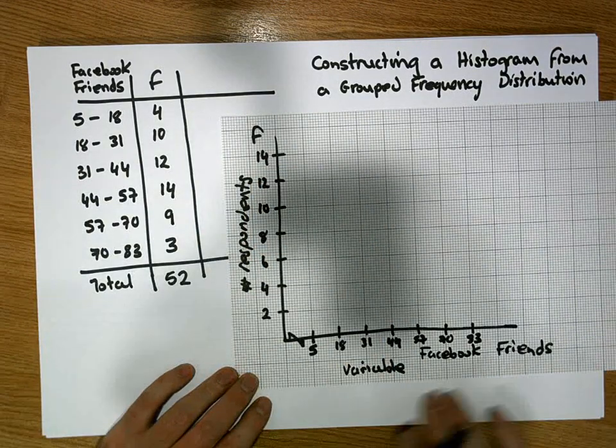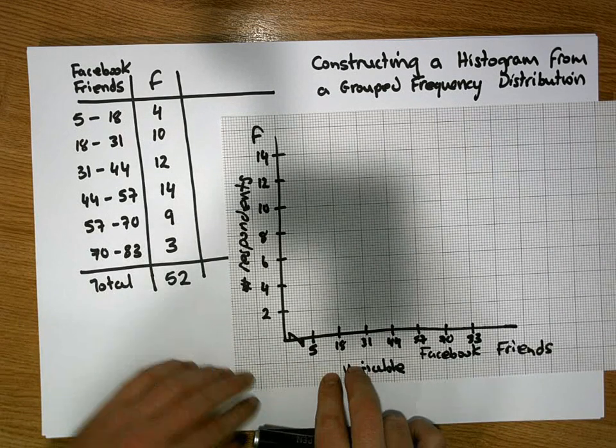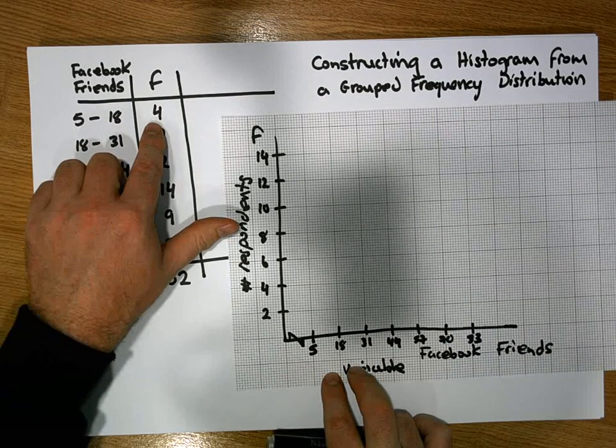So we've represented both of our axes. Now what we do is for each one of our intervals, we create a bar of the appropriate height.